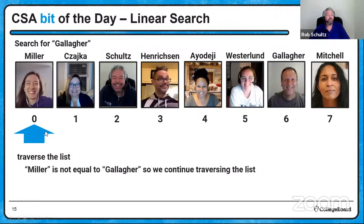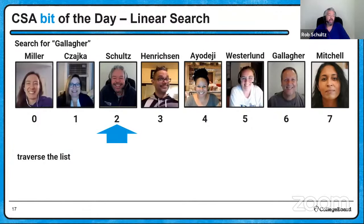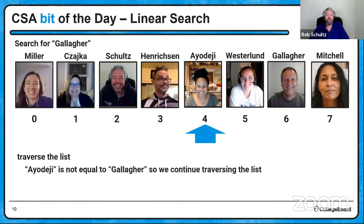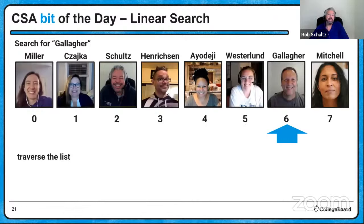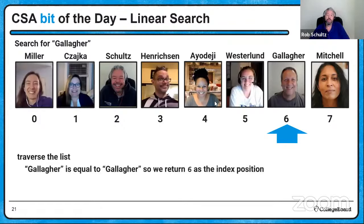We start with Mrs. Miller at index 0. Miller is not equal to Gallagher, so we continue. Chica is not equal, Schultz is not equal, Henrickson is not equal, IDOG is not equal, Westerlund is not equal — but then we hit Mr. Gallagher, who is equal to Gallagher. We return index position 6 as the location of Mr. Gallagher. If we're searching for something not in the list, we traverse to the end and typically return negative one — the universal indicator that what we searched for isn't there.